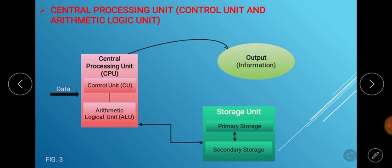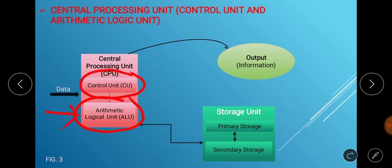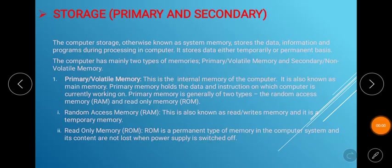We have a diagram here showing how the central processing unit of the computer operates. Data is entered using our input medium into the CPU. The CPU decides which operation or task it is — if it is a mathematical operation, it is handled by the Arithmetic Logic Unit; if it is meant to be performed by other components, the Control Unit assigns it to those components. After processing, the information is sent to the output unit to display to the user or stored into the memory of the computer.